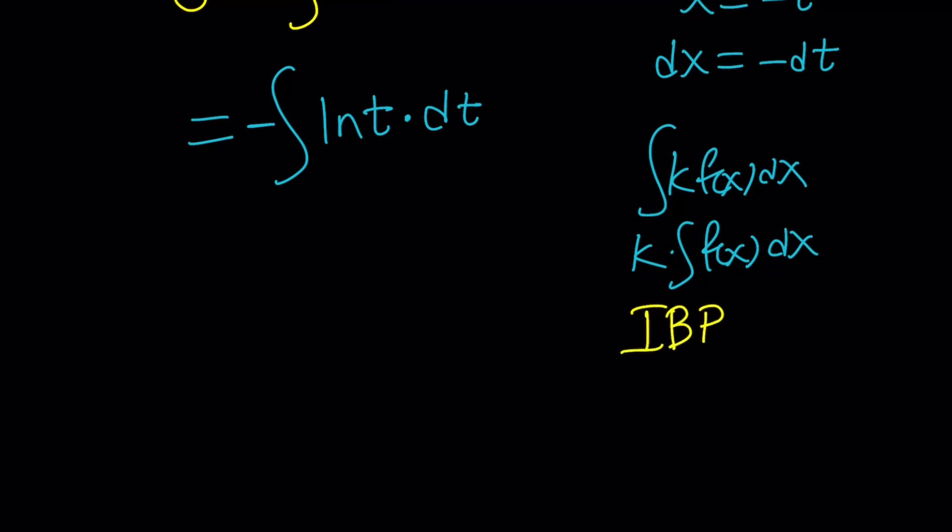Here's how integration by parts works. You have an integral of like UDV, and it's equal to UV minus the integral of VDU. Now, why does this work?